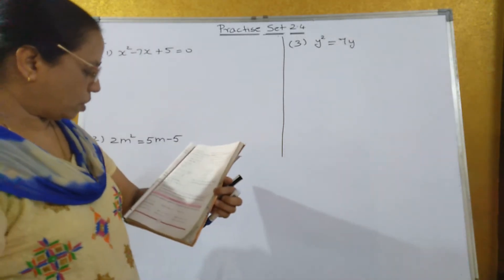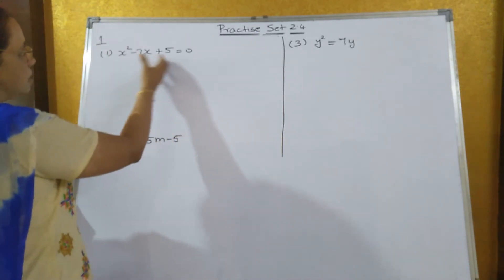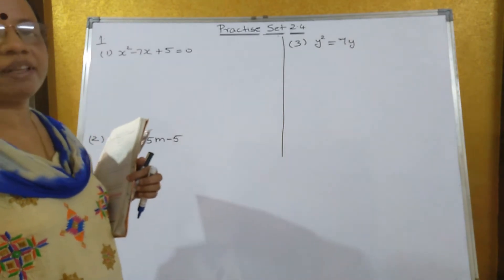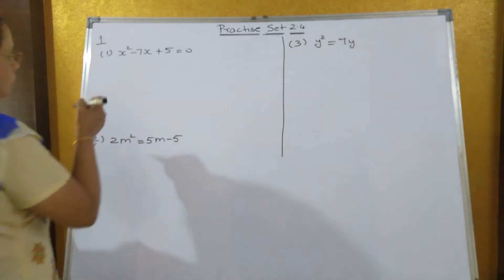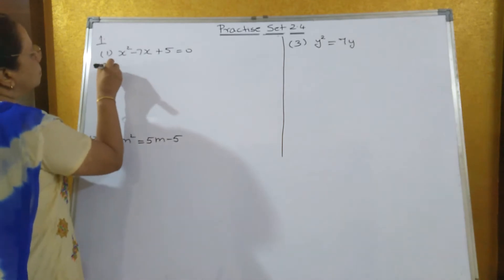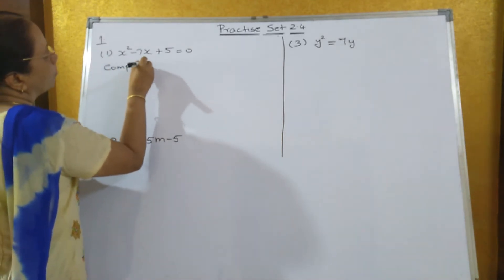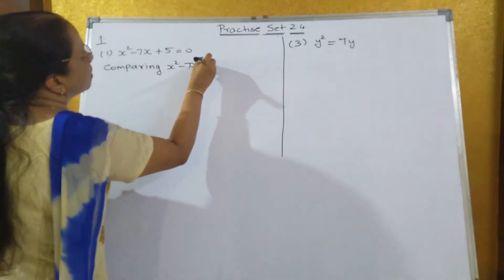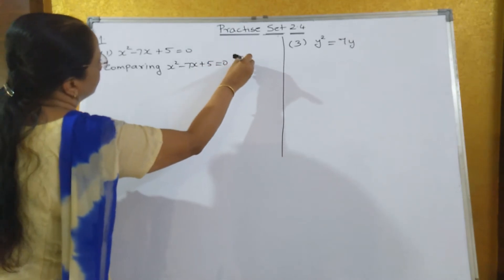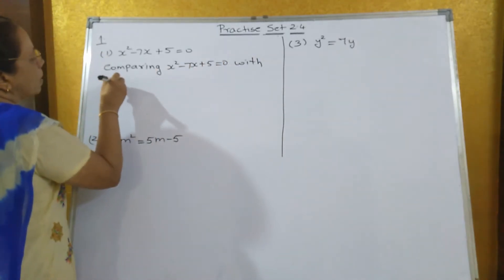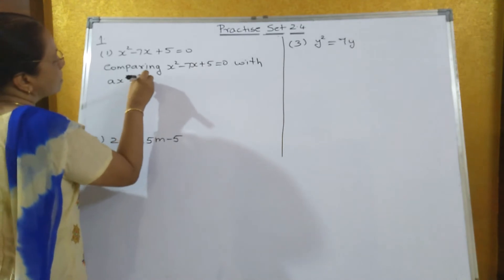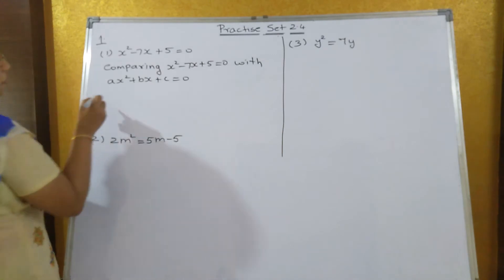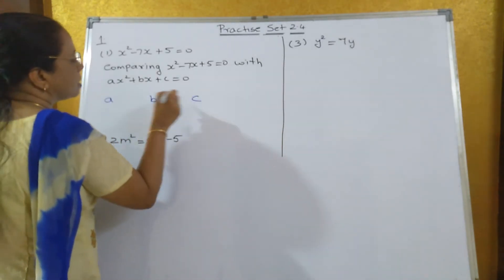Now, practice at 2.4 — compare the given quadratic equation with Ax² + Bx + C = 0 and find the values of A, B, and C. Comparing x² - 7x + 5 = 0 with Ax² + Bx + C = 0, what we get in place of A, B, and C?